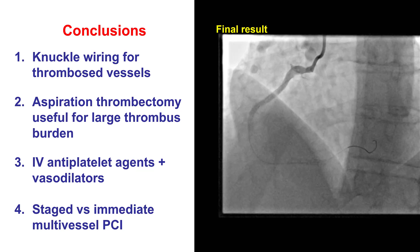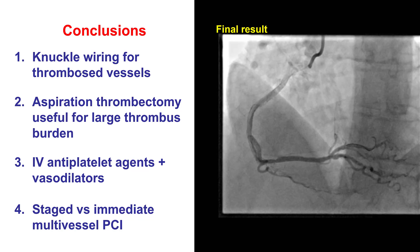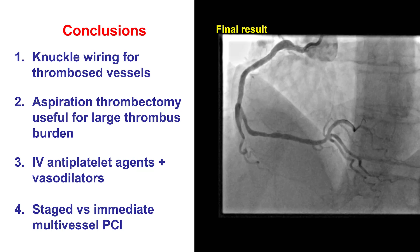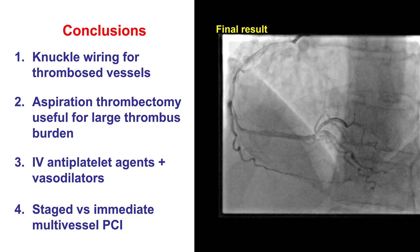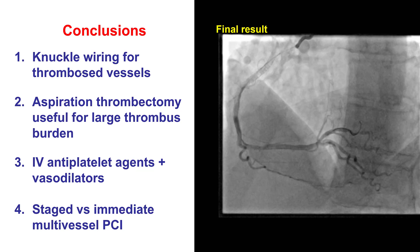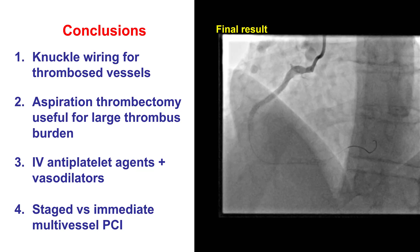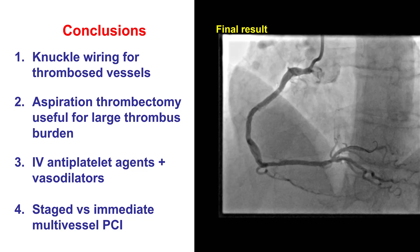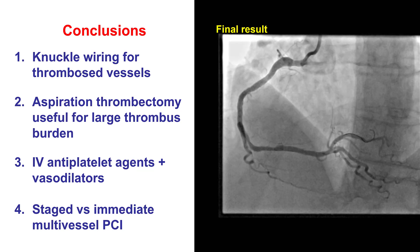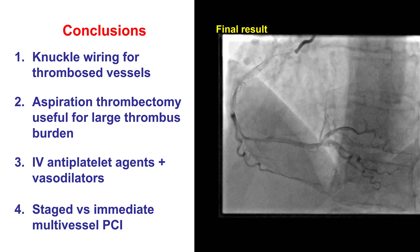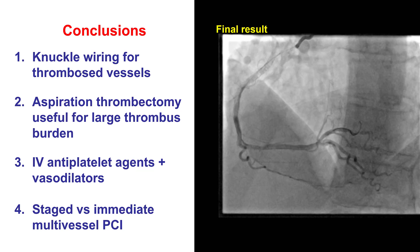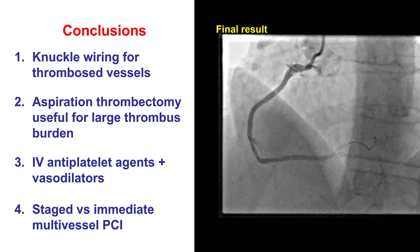Second, aspiration thrombectomy — although in routine application it did not provide benefit — in selected cases with large thrombus burden, as in this patient, it can facilitate restoration of flow, decrease the risk of distal embolization, and can be performed in various ways. Aspiration thrombectomy was effective in our particular patient.